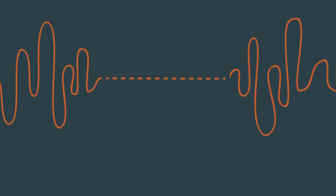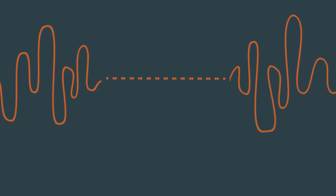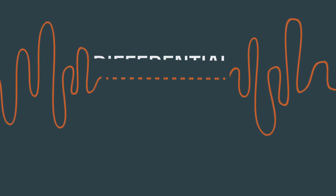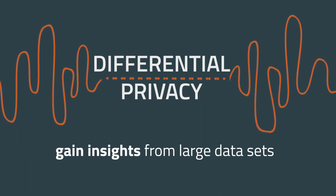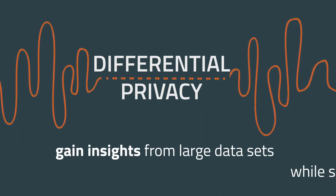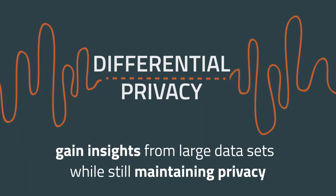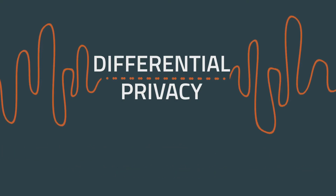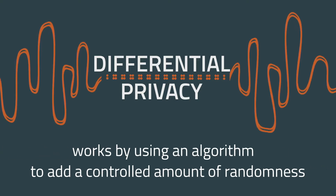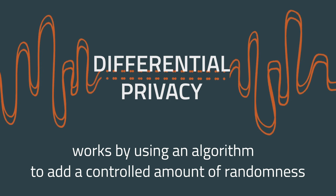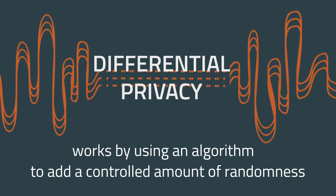To address this challenge, computer scientists have developed an approach called differential privacy that can be used to gain insights from large data sets while still maintaining privacy. Differential privacy works by using an algorithm to add a controlled amount of randomness, or noise, into the computation.